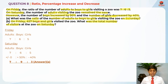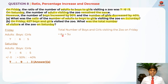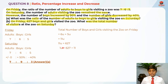If 627 are boys and girls on Friday, that means six units plus five units is 627. Six units plus five units is eleven units, so eleven units equals 627. One unit equals 627 divided by 11, which gives us 57.